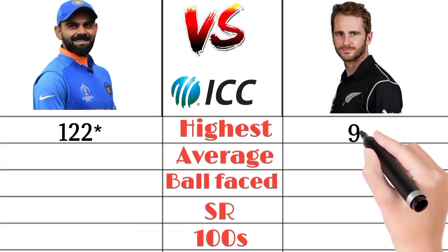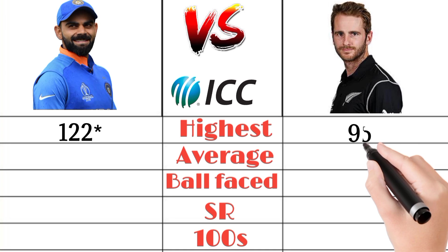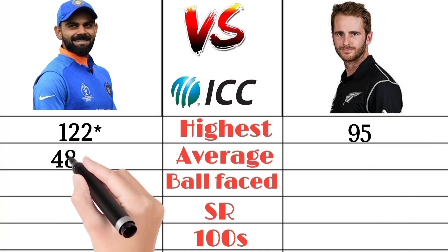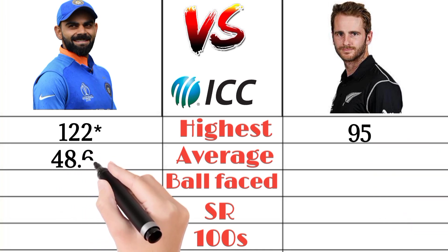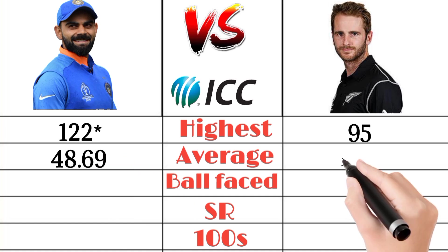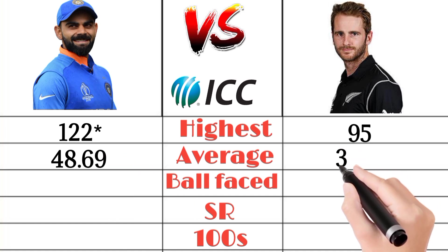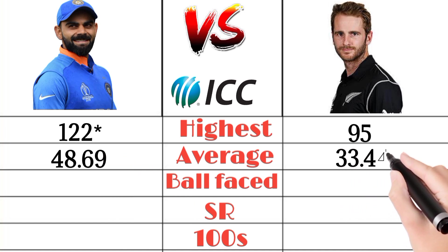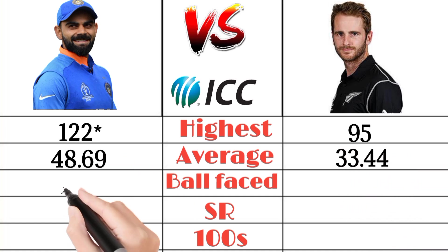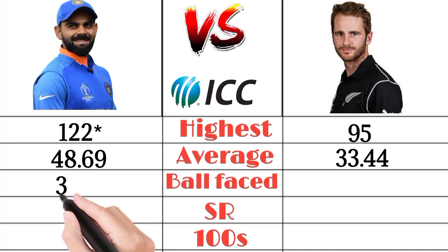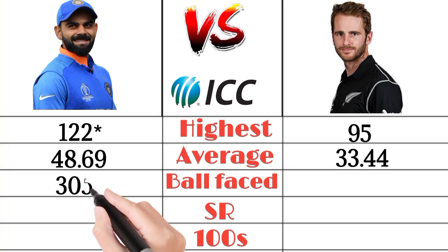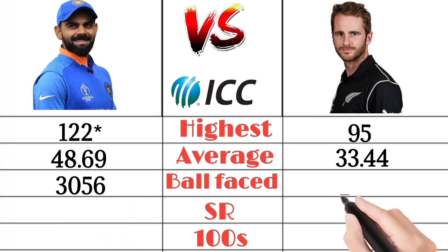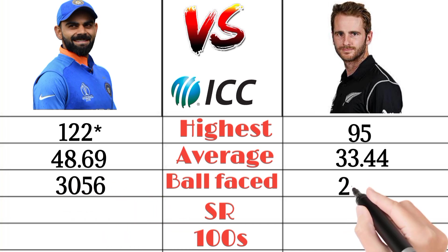Virat Kohli's highest score in T20s is 122 and Kane Williamson's highest is 95. Virat Kohli's T20 average is 48.69 and Kane Williamson's is 33.44. Virat Kohli faced 3056 balls in T20 cricket.